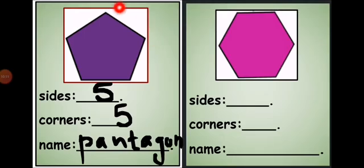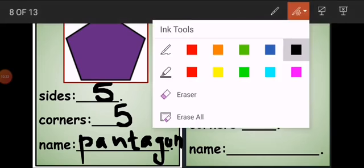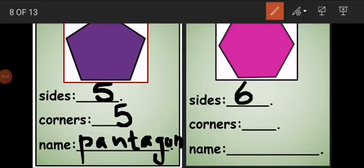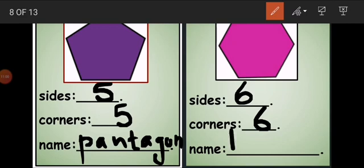Remember: a shape with five sides and five corners is called a pentagon. Now look at this shape — again a flat surface 2D shape with straight lines. Count its sides: one, two, three, four, five, six — six sides. Count its corners: one, two, three, four, five, six — six corners. A flat closed 2D shape with six sides and six corners is called a hexagon.